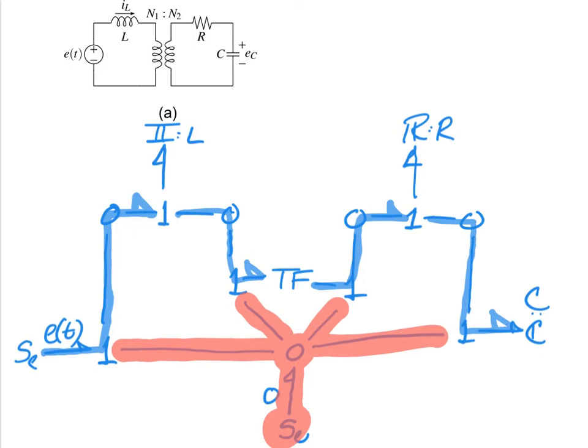So now, if we simplify, our simplified bond graph will look like this. On one side, we have a one junction with our effort source and our inductor.